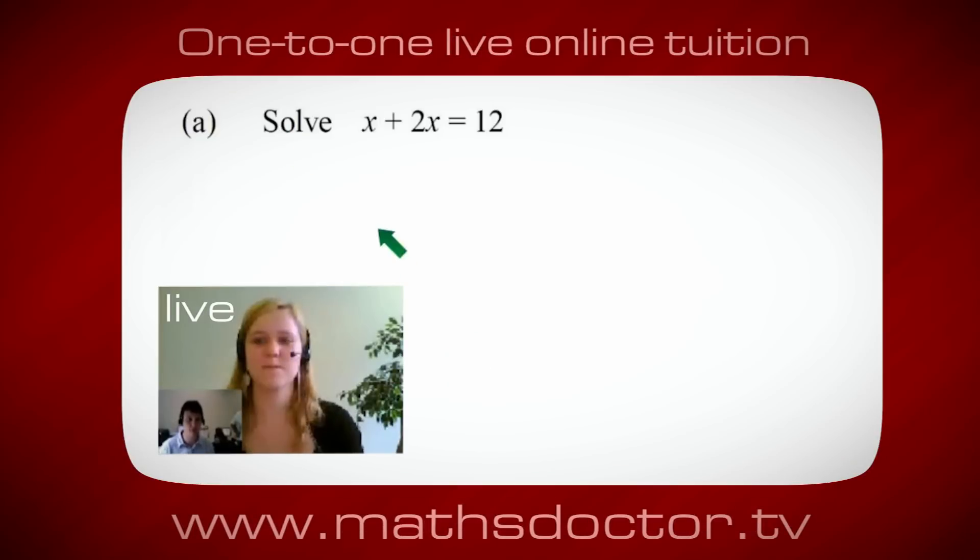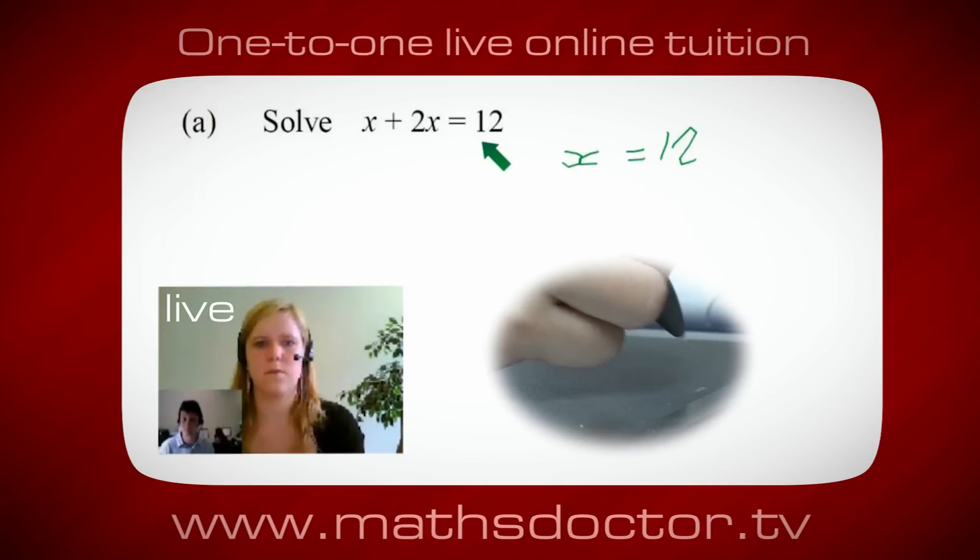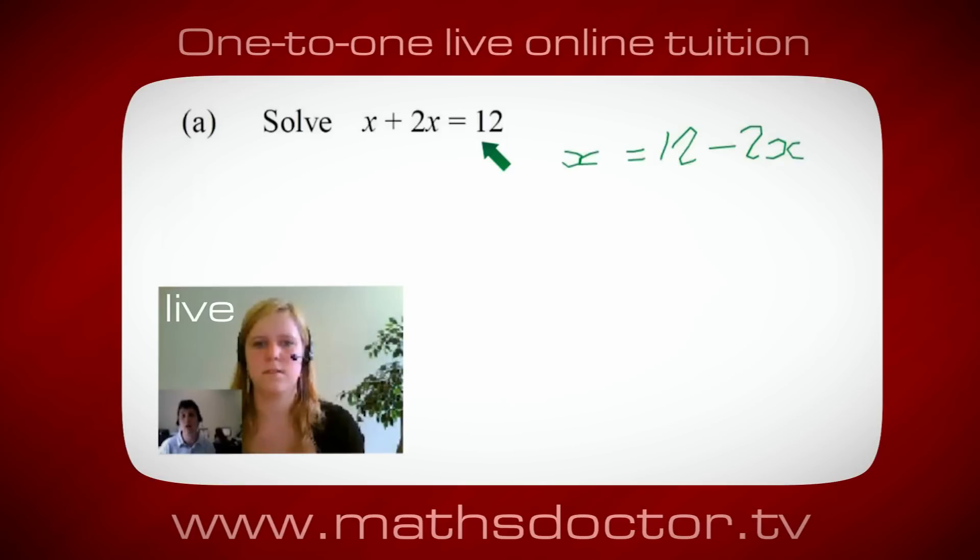Okay Marie, so let's look at this one: solve x plus 2x equals 12. So what do you think you do first? Okay, well I want x on its own, so I would put x equals 12 minus 2x. Okay, so a lot of the time we want to get x by itself, but what we want to do first is get all of these x's together. So can you see anything we can do with this to get all these together in one place?